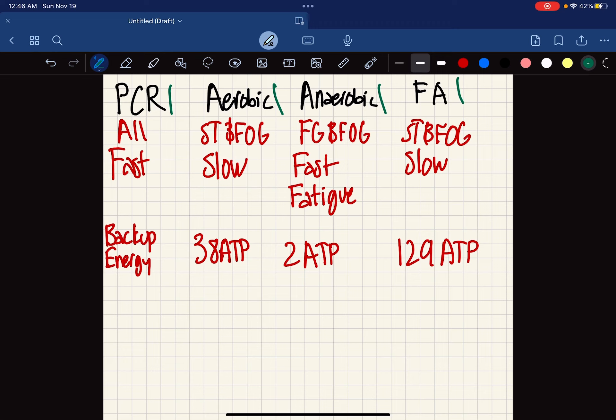I believe that the phosphocreatine is used in all situations as it is backup energy. Aerobic is used for the slow and the FOG. The anaerobic is for the FG and FOG, and the fatty acids is for the slow and FOG. The PCR is a fast process.